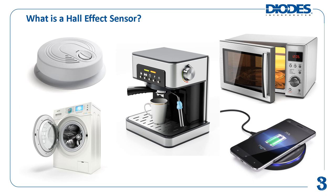Smoke detectors can use Hall Effect Sensors in case tampering detection, where it detects if the chassis of the smoke detector has been removed. Some designs also use a Hall Effect Sensor to allow a smoke detector to enter a self-test mode using a magnet instead of having to physically push a button on the smoke detector itself. This is useful when the smoke detector is mounted high on a wall or ceiling.